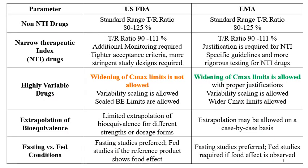Comparing USFDA and EMA requirements: for non-NTI drugs, the standard range for 90% CI — T/R ratio — is 80 to 125%, and this is the same for both EMA and USFDA. For narrow therapeutic index drugs, the T/R ratio is the same for both USFDA and EMA at 90 to 111%. For USFDA, additional monitoring and tighter acceptance criteria with more stringent study designs are required. For EMA, the same 90 to 111% applies, but justification is required along with specific guidelines and more rigorous testing for NTI drugs.